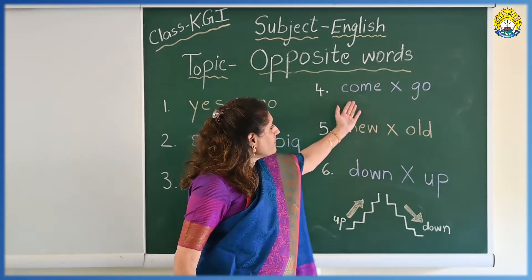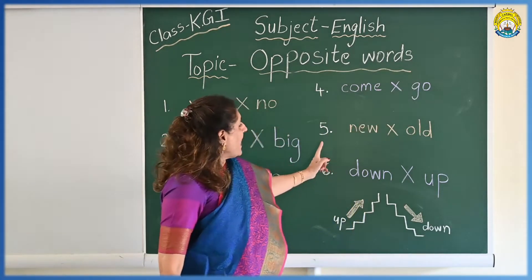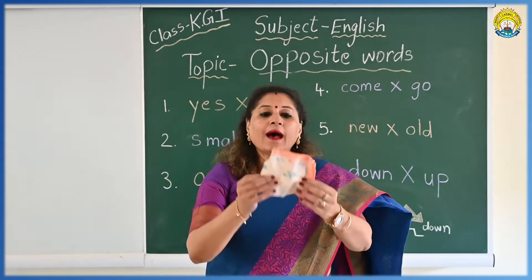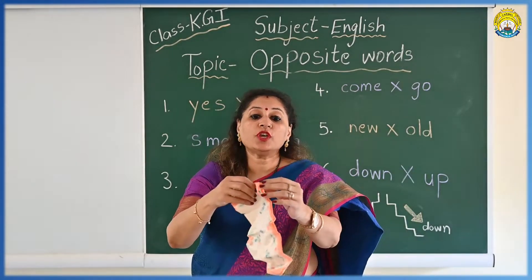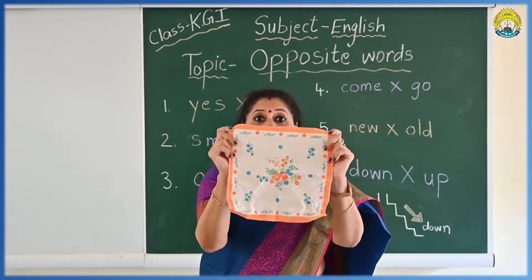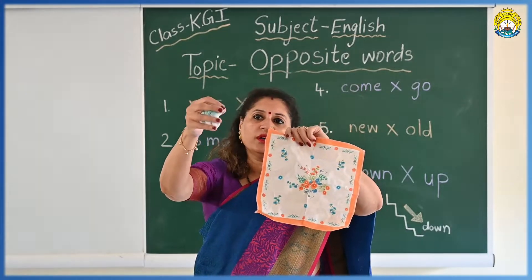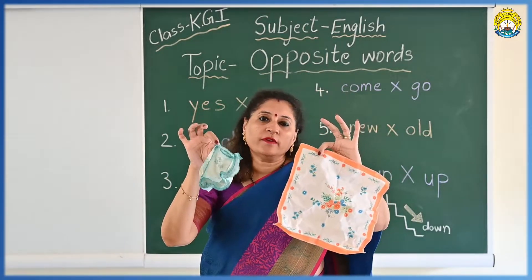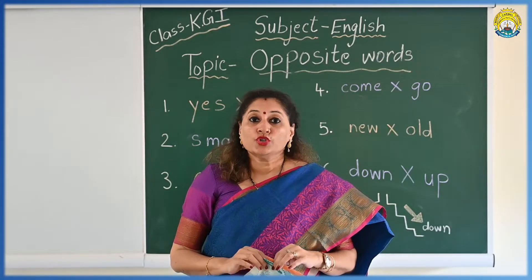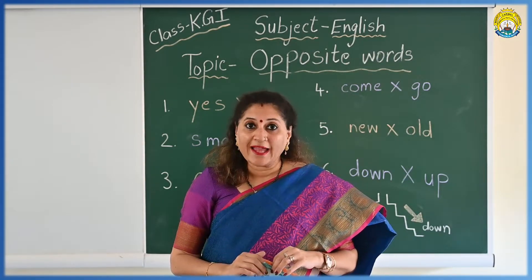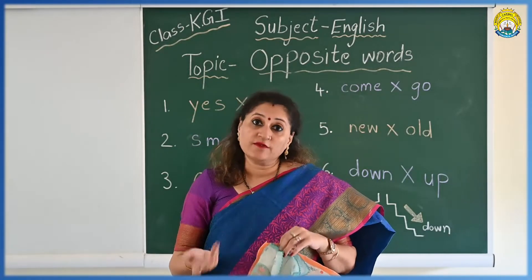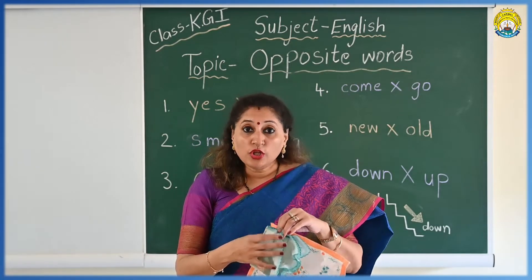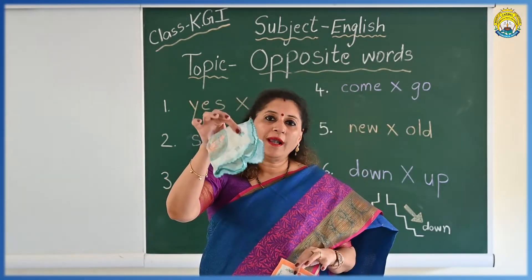Now the next opposite word is new and old. See children, I am having a new handkerchief. This is a new hanky. And this one is old — this hanky is old. New, old. Children, you must have gone with your parents to buy new clothes. You wear new clothes at parties and when a festival is there. So that is new.